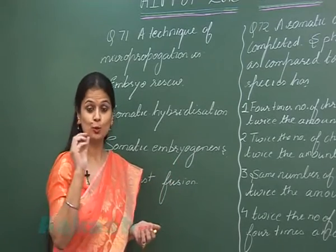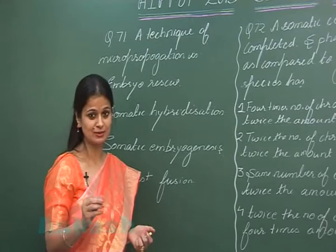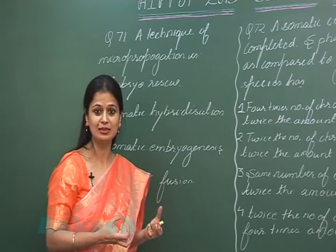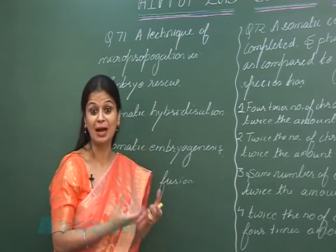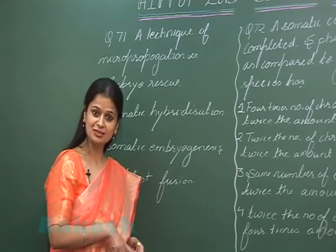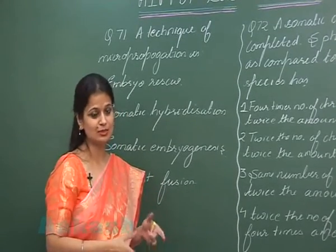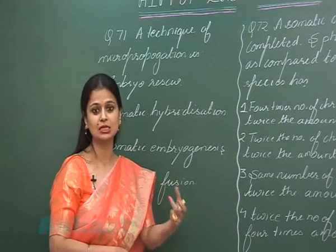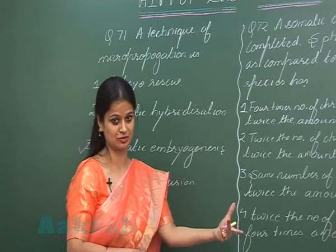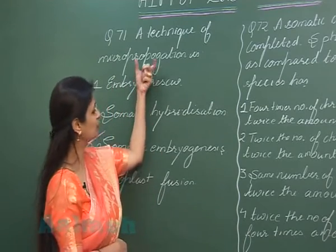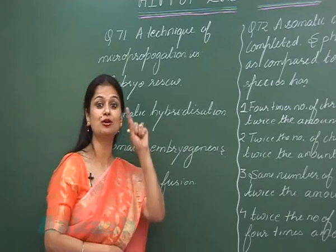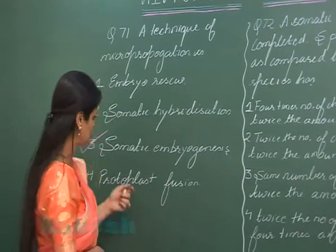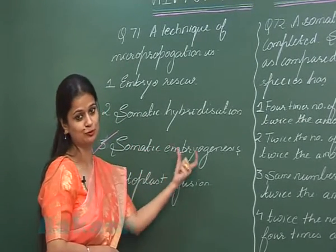In somatic embryogenesis, if we put a high amount of auxin in the callus, there would be the formation of embryos directly. High concentration of auxin in the callus will lead to the formation of embryos. These embryos then can result in the formation of plantlets, thus leading to micropropagation. This technique of formation of embryo without fertilization, without fusion, is called somatic embryogenesis.